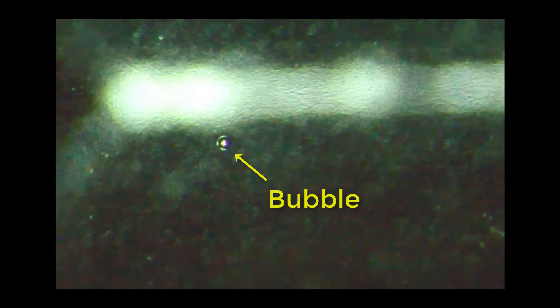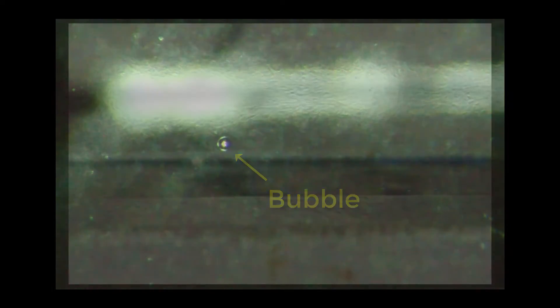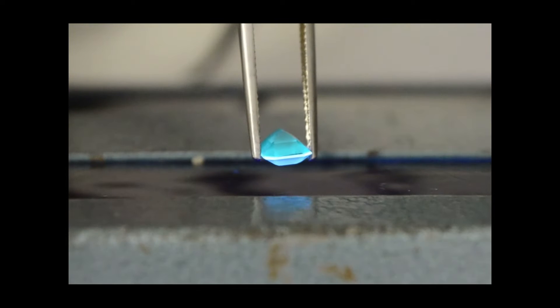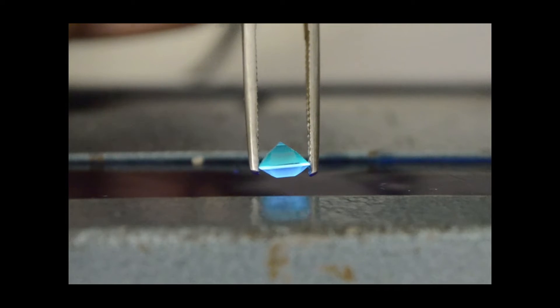The RR taken from the pavilion is also 1.725. Under shortwave ultraviolet we get a chalky blue and green fluorescence, which is characteristic of synthetic spinel.